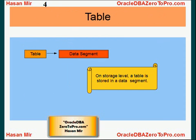Table is a basic unit of storage in a database. When users create a table, the table is stored on the storage level in a data segment. Eventually, a data segment could be mapped to one physical file or multiple files if we are partitioning it, but that is out of the scope right now. What you need to understand is the table is an object in a logical database structure and a data segment is an object in a logical storage structure.